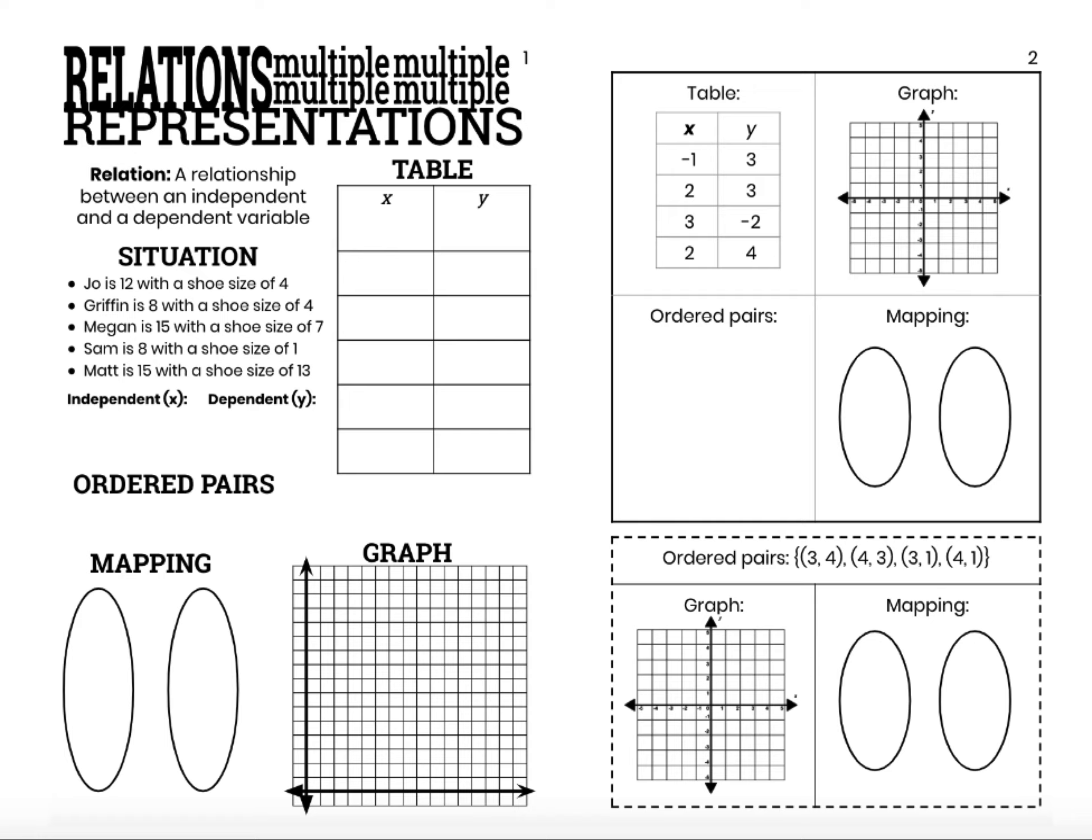On pages one and two of our unit four notes, we are looking at multiple ways to represent a relation. A relationship is just a relationship between an independent and a dependent variable. We have an example of a relation here in our situation where we have a bunch of kids: Joe, Griffin, Megan, Sam,